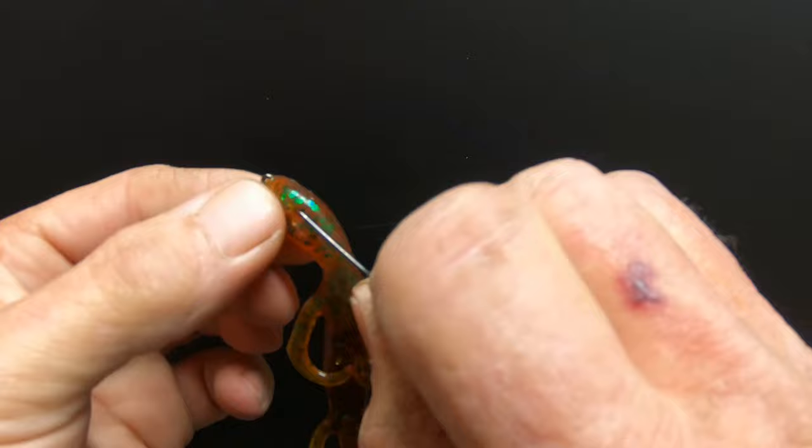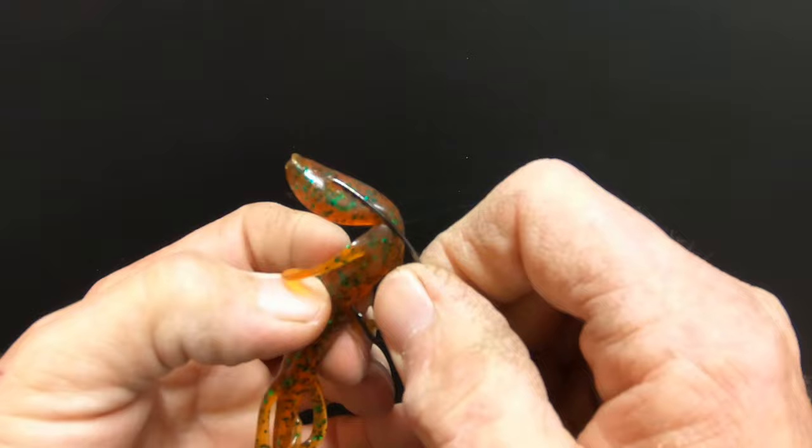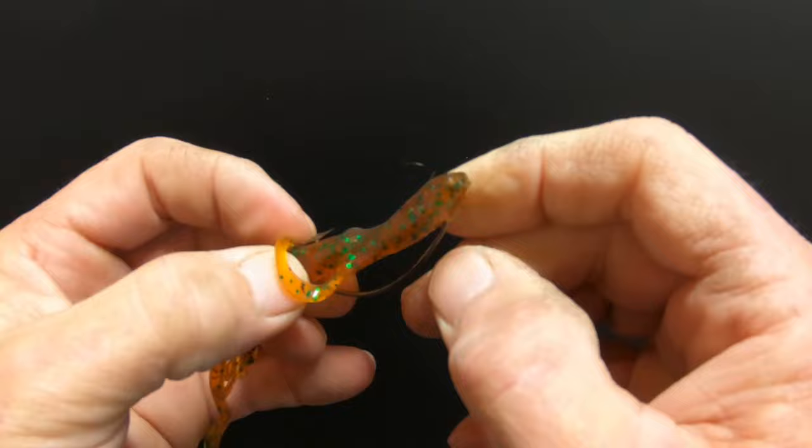You've already got your line attached with your sinker there. And if you'll take your lizard, hold it just like this with your fingers, and go up and go through, go all the way through the lizard.